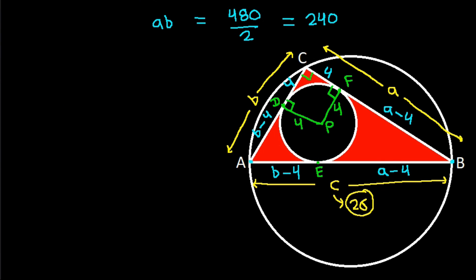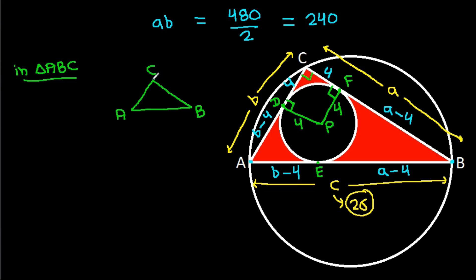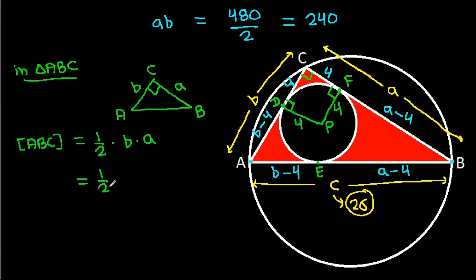In triangle ABC, AC is b, BC is a, and angle ACB is 90 degrees. So area of triangle ABC equals one-half times base b times height a, which equals one-half times ab, and ab is 240. That gives area of triangle ABC equals 120.